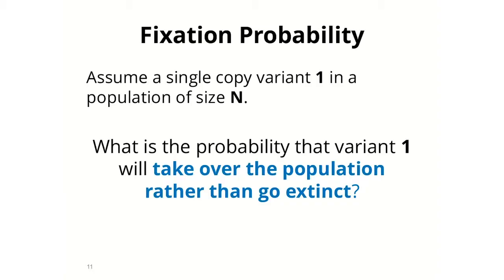So that's how the model works. What are we interested in? Assuming we have a single copy of variant 1, what is the probability that variant 1 will go to fixation — will take over the population — rather than go to extinction? There's just one copy, so it can go extinct because of random genetic drift; somebody might step on it by accident. But if it survives random genetic drift, it will go to fixation because it has an evolutionary advantage. So we're interested in this fixation probability.